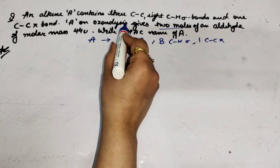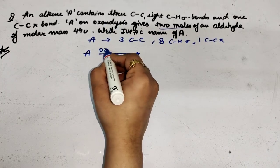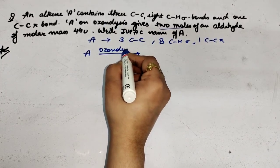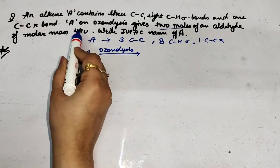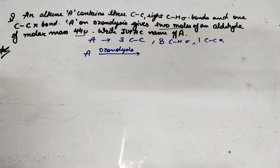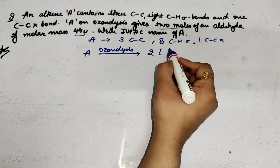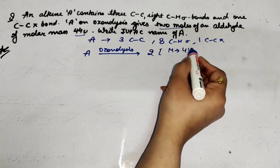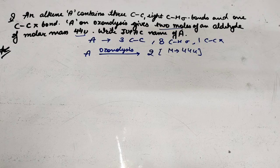A undergoes ozonolysis and gives a product. Some alkyne A undergoes ozonolysis and the product is two moles of an aldehyde of molar mass 44u. Now you need to find which aldehyde this is. They haven't told you what aldehyde is formed, but they've given you the molar mass is 44u.